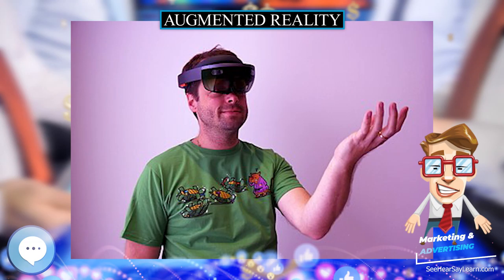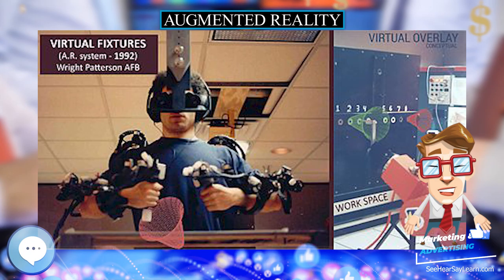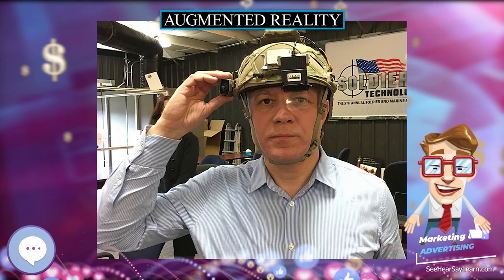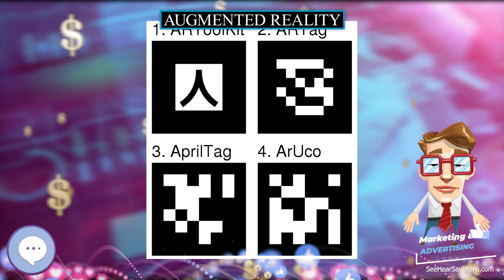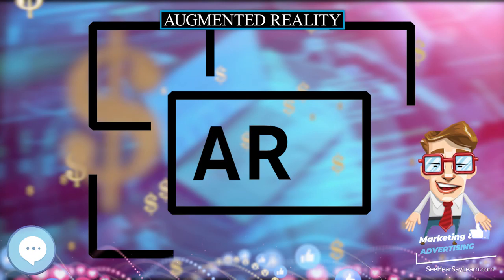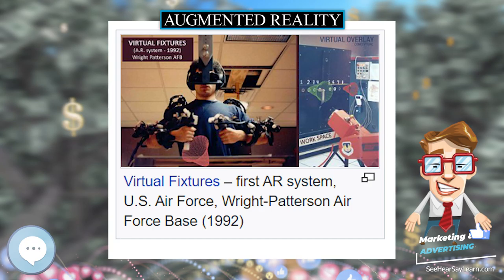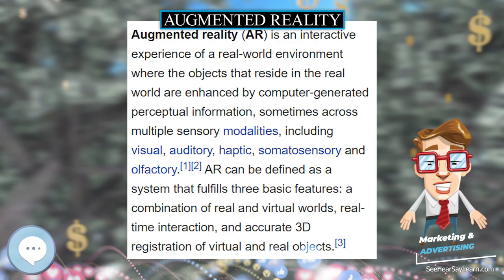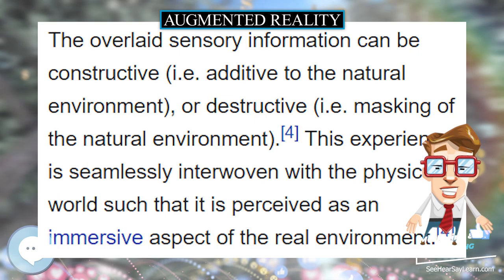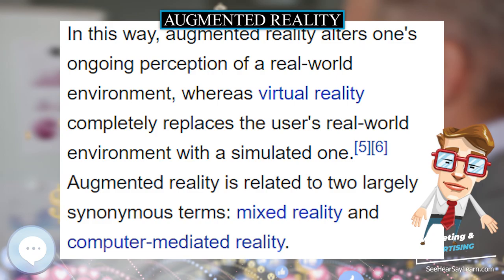The overlaid sensory information can be constructive (additive to the natural environment) or destructive (masking of the natural environment). This experience is seamlessly interwoven with the physical world such that it is perceived as an immersive aspect of the real environment. Augmented reality alters one's ongoing perception of a real-world environment, whereas virtual reality completely replaces the user's real-world environment with a simulated one. AR is related to two largely synonymous terms: mixed reality and computer-mediated reality. The primary value of AR is the manner in which components of the digital world blend into a person's perception of the real world, not as a simple display of data but through the integration of immersive sensations perceived as natural parts of an environment.